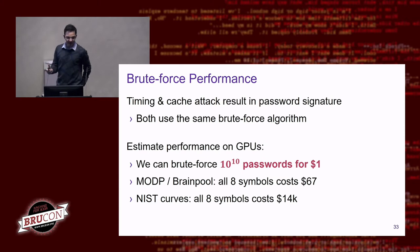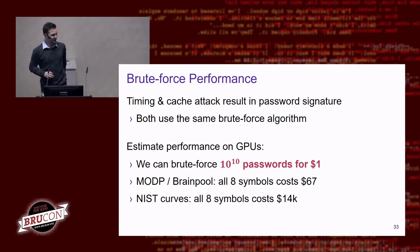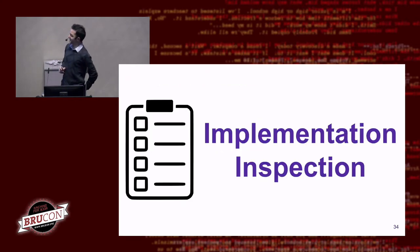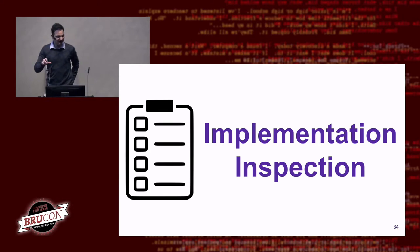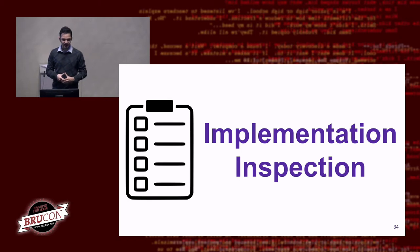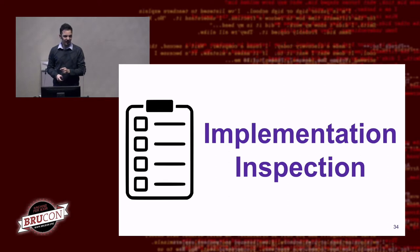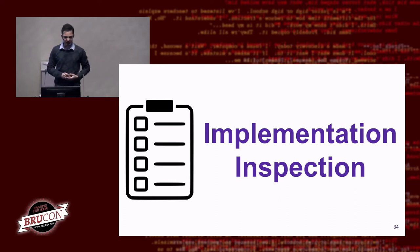Beyond timing and cache attacks, we also looked at actual implementations of Dragonfly — both early WPA3 implementations and EPWD implementations. EPWD has been around much longer, providing more implementations to analyze. The first implementation issue we checked is a so-called invalid curve attack. When using elliptic curves with the Dragonfly handshake, the first client message includes a point (X, Y) on the curve.